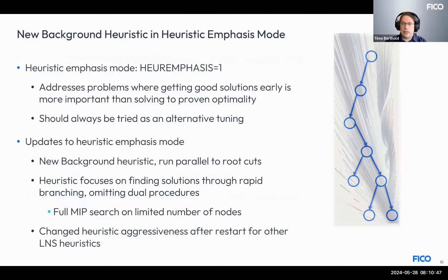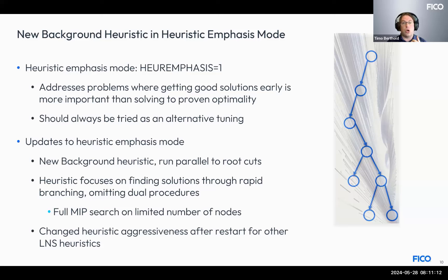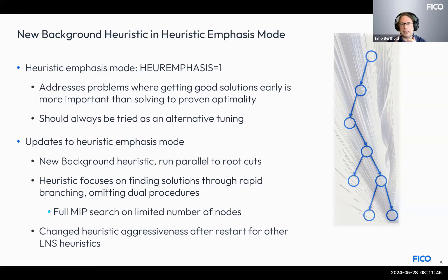The next topic is our heuristic emphasis mode, enabled by the single control VimEmphasis. Setting emphasis to 1 tweaks the algorithm to favor finding good solutions early in the search process, potentially at the expense of time required to prove full optimality. This is the one control always worth trying when dealing with models that cannot easily be solved to optimality within given time limits. In many cases, this leads to much better solutions being found under a restrictive time limit, though it's not a guarantee.